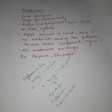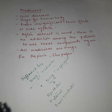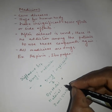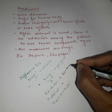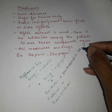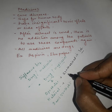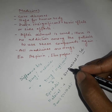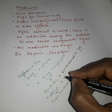What is the meaning of synthetic, natural, and semi-synthetic? Synthetic means they are synthesized in a chemical lab — they are manufactured in the lab. Natural means they are isolated from nature.